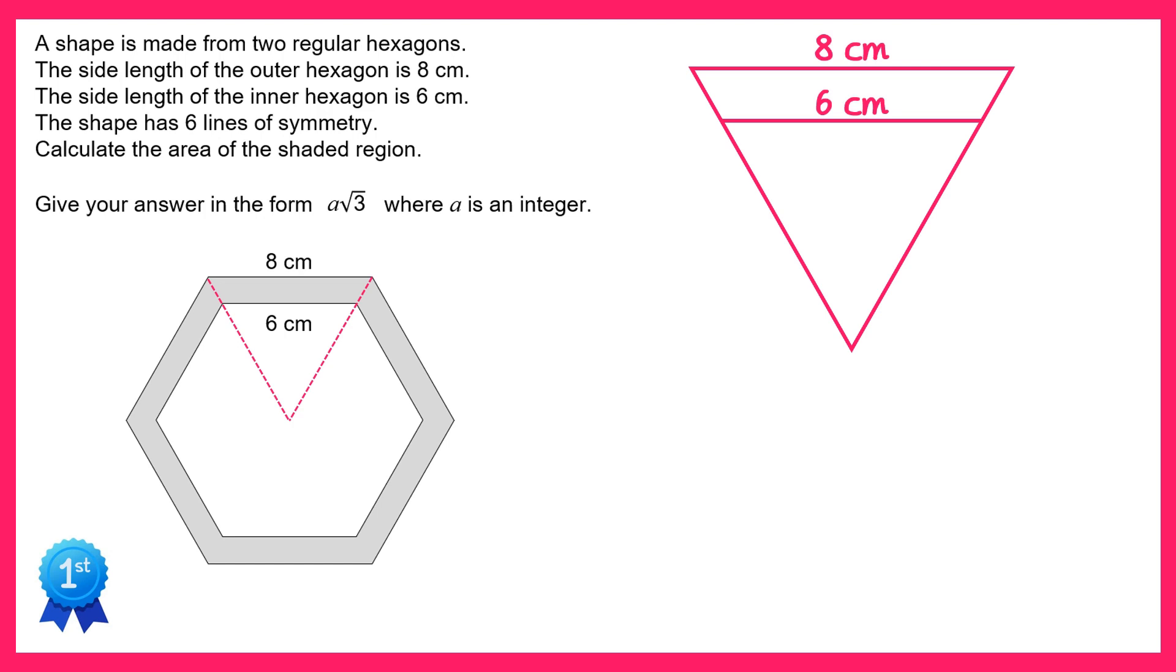We're now going to draw a line that goes straight down the center of the triangle like this, and we're going to focus on this part of the triangle here, so a right-angled triangle.